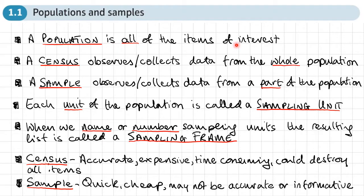A population is all of the items of interest. So this might be the whole population of a country. It may be all the items in the shop, for example.